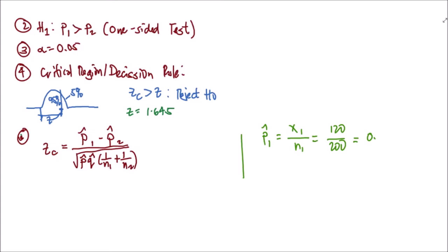Computing 120 divided by 200 gives us p̂₁ = 0.6. Then p̂₂ = x₂/n₂ = 240/500.